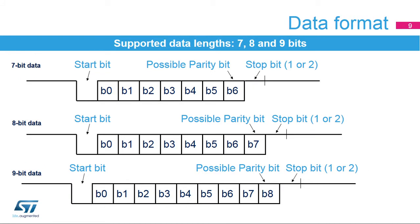The frame format consists of a set of data bits in addition to bits for synchronisation and optionally a parity bit for error checking. A frame starts with one start bit, where the line is driven low for one bit period, signalling the start of a frame and used for synchronisation. The data length can be 9, 8, or 7 bits, with the parity bit counted. Finally, one or two stop bits, where the line is driven high, indicate the end of the frame.